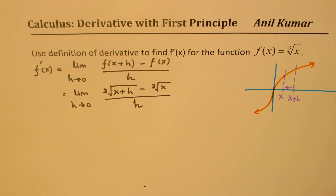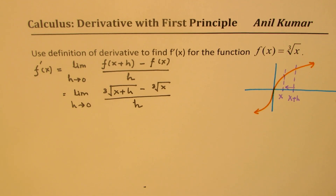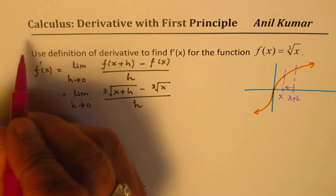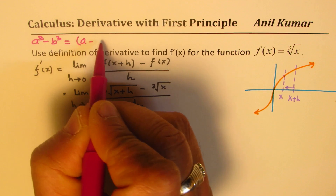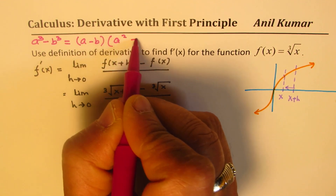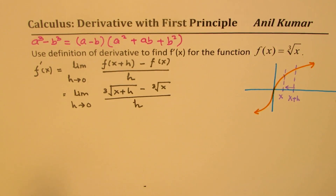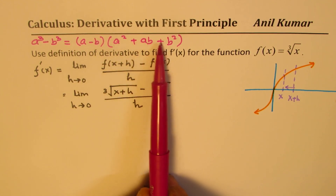Now we have a cube root difference here. We need to rationalize it. How do you rationalize a cube root? That is a big question, and that is probably the most difficult part here. So remember the formula: a cube minus b cube — that can help. We actually want a cube minus b cube. The formula is: a³ - b³ = (a - b)(a² + ab + b²). So to rationalize, we need to multiply this difference by a² + ab + b².